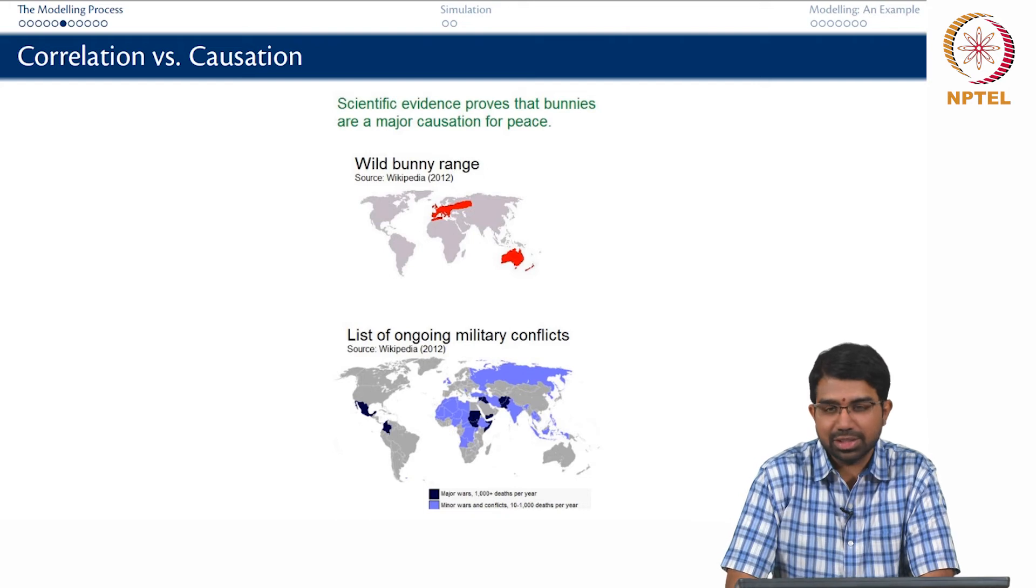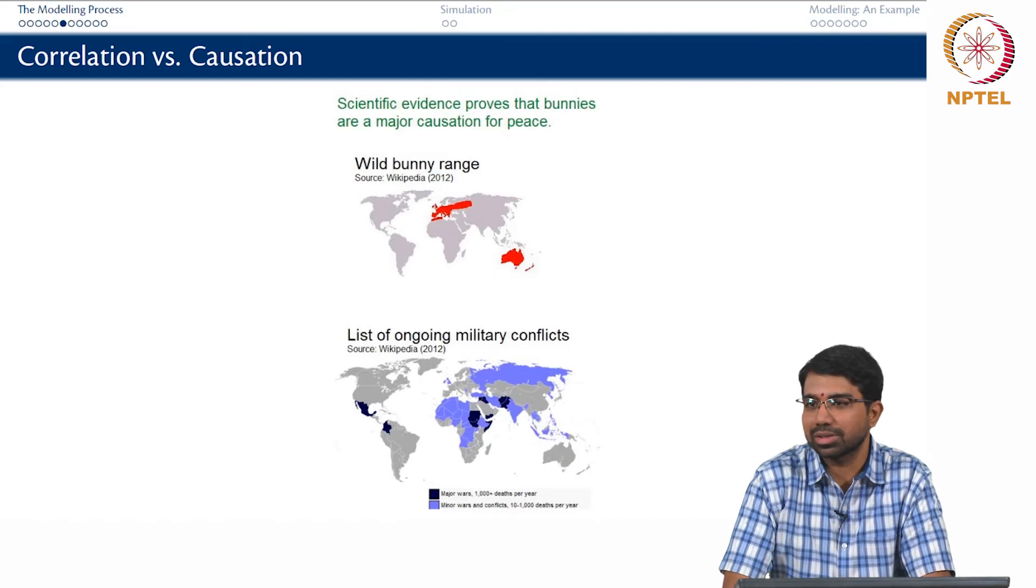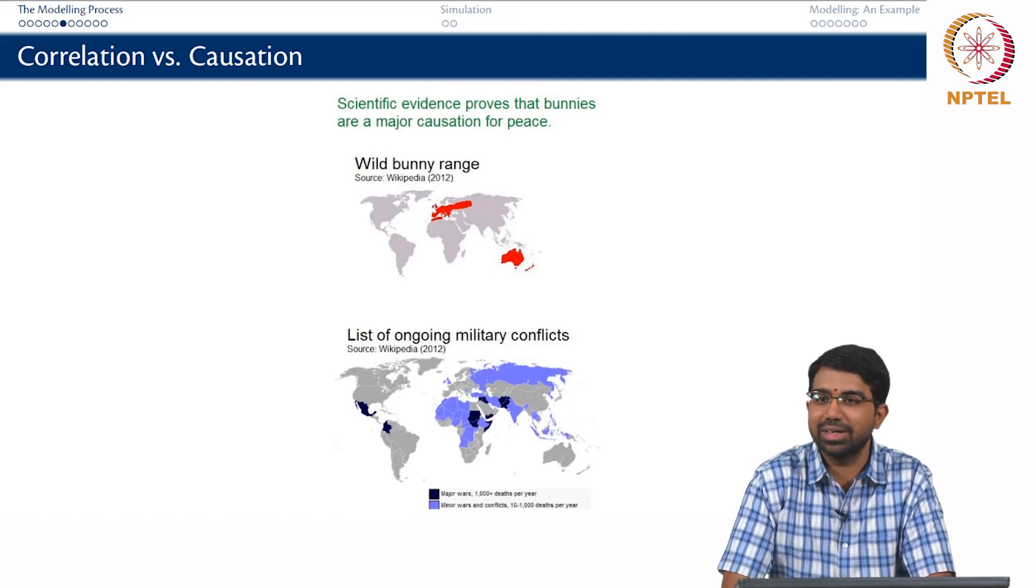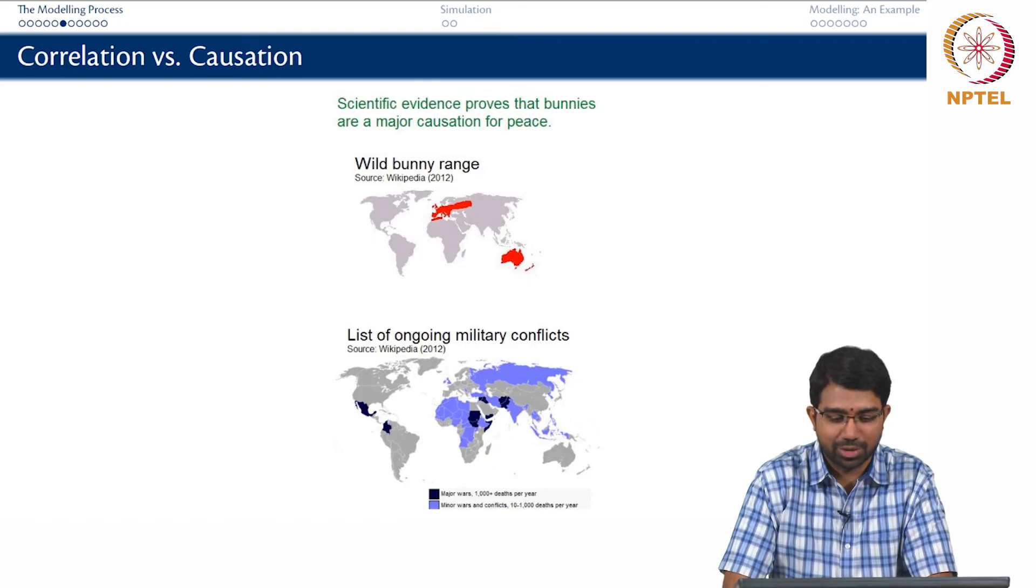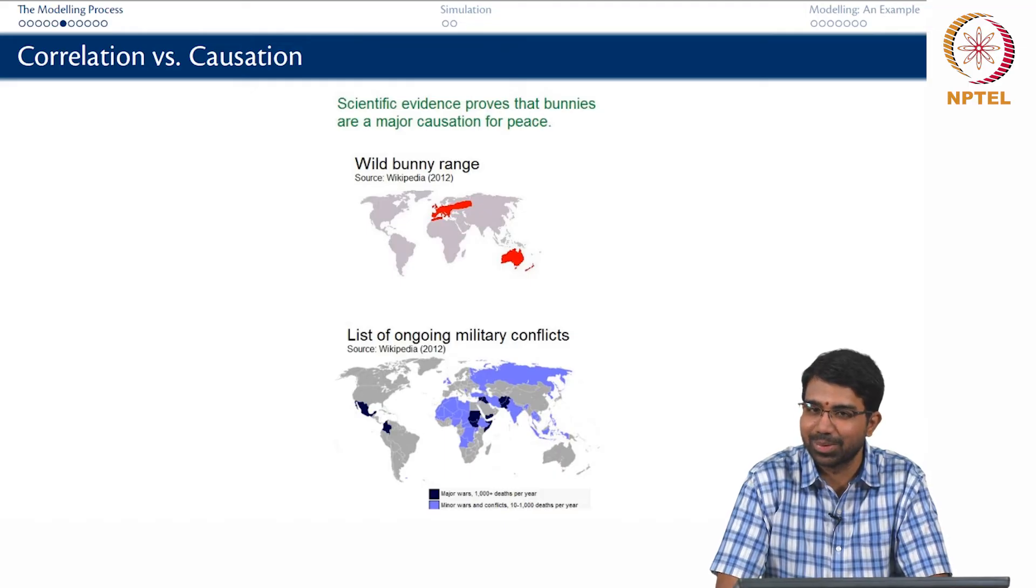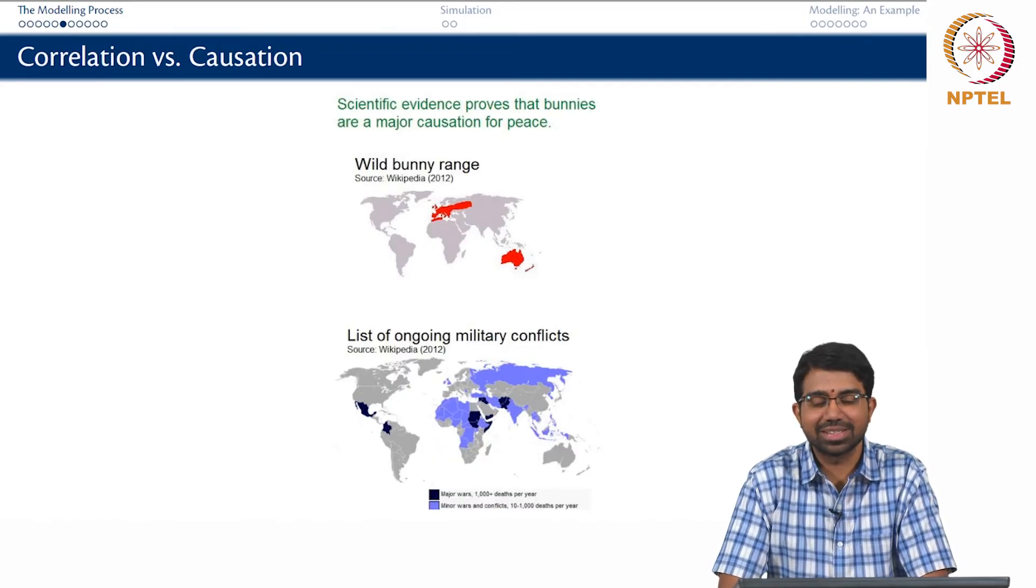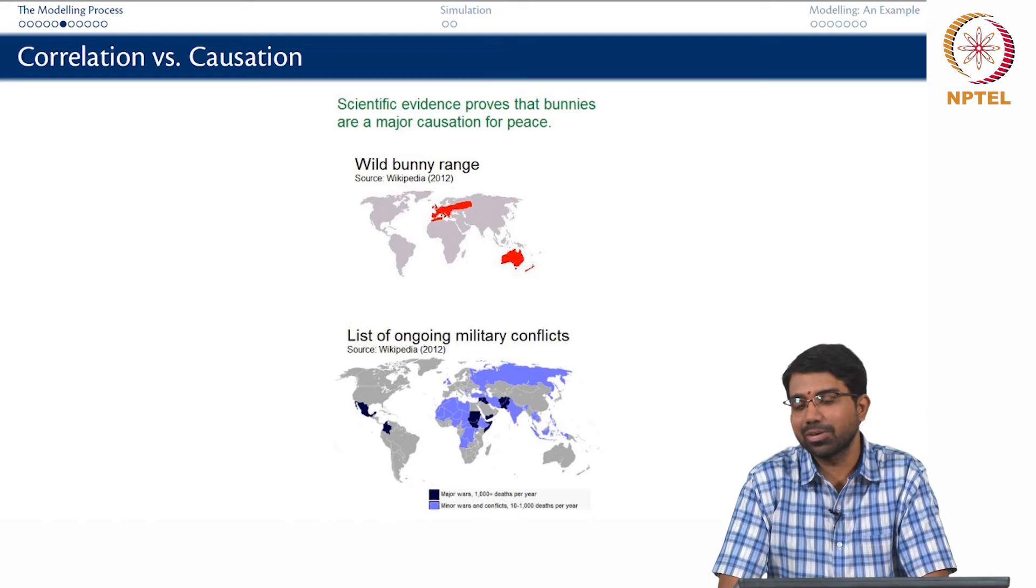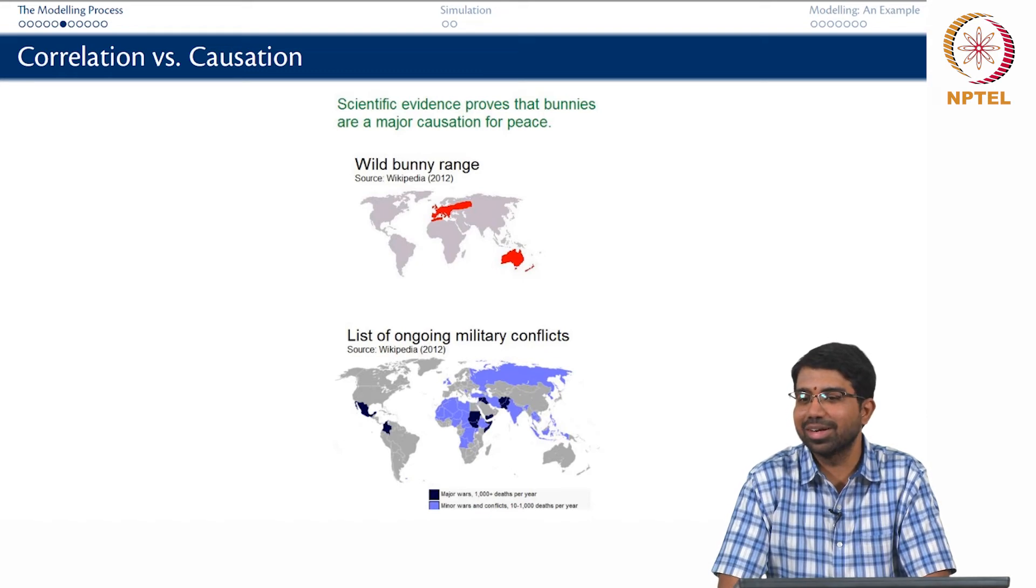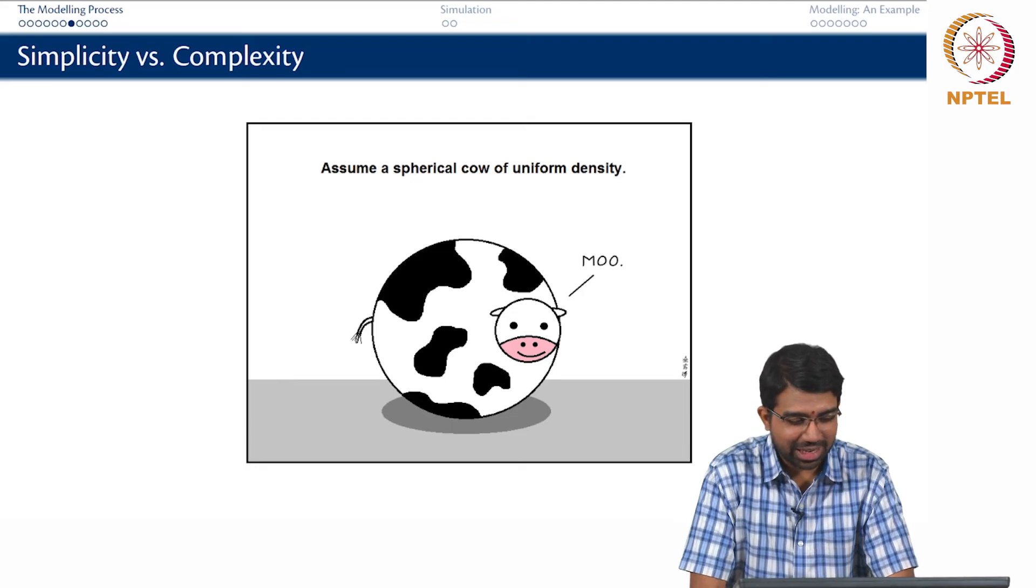And a lot of times you may end up with dangerous mistakes such as these. So correlation does not always imply causation. There are cases where it can but it is a very tenuous thing and you have to be careful. So this is a kind of funny thing which says that bunnies are a major causation for world peace. So wherever you have bunnies, you do not find any conflicts or wars, which obviously does not make sense. I think you had some very interesting correlations like that. So you know that the number of Nobel prizes is well correlated with per capita chocolate consumption and so on. So you have to be careful about those things.